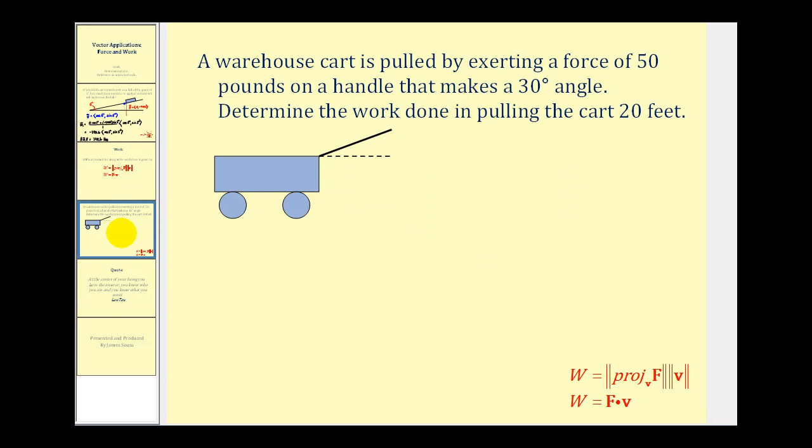Here a warehouse cart is being pulled by exerting a force of fifty pounds on a handle, as we see here in black, that makes a thirty degree angle. So this angle here would be thirty degrees. Determine the work done in pulling the cart twenty feet. Okay, so on this problem we'll go ahead and let this represent the force vector. And since the cart is being pulled twenty feet horizontally, we could let this represent vector v.